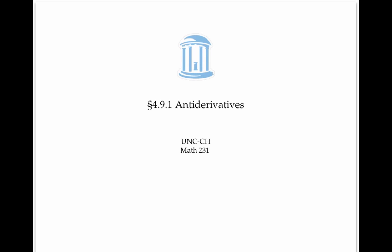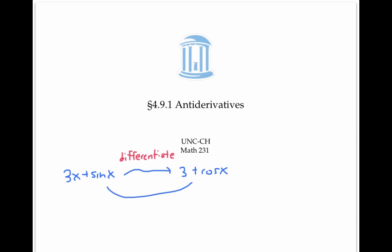When we go from a function, say, three x plus sine x, to its derivative — in this case, three plus cosine x — that's called differentiating, or finding a derivative. Anti-differentiating, or finding an antiderivative, takes us the other direction: from a derivative to a function that has that as its derivative.